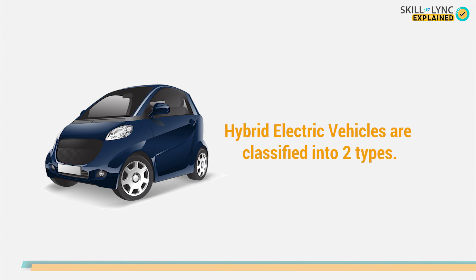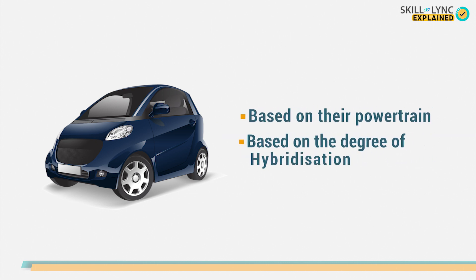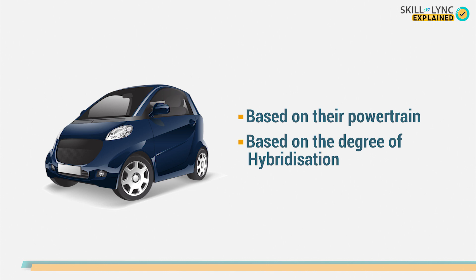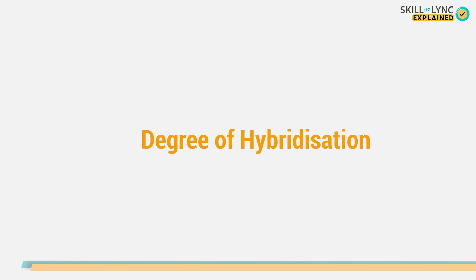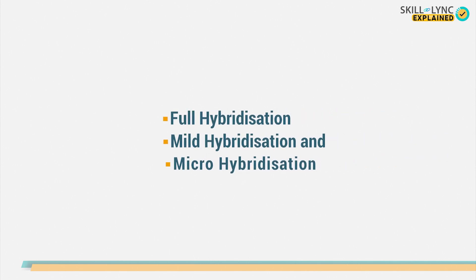Hybrid electric vehicles are classified into two types, based on their powertrain and based on the degree of hybridization. We've already made a dedicated video on the classification based on powertrains. We'll add a link to it in the description. Do check it out. So let's move on to the classification based on the degree of hybridization. Here, the vehicles are further classified into three types: the full hybrids, the mild hybrids, and the micro hybrids.